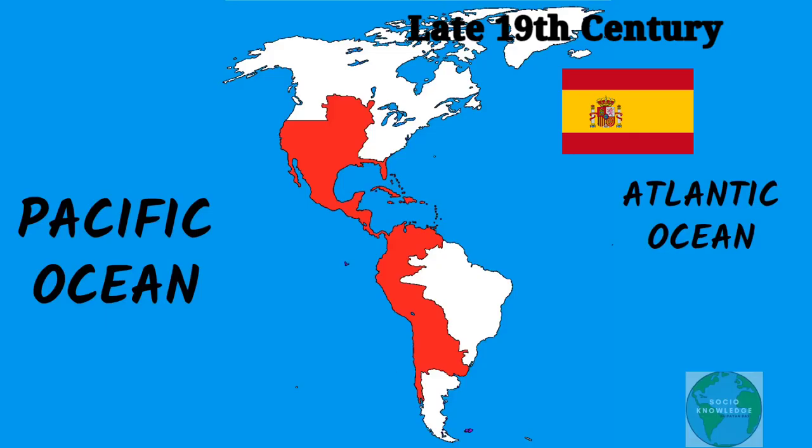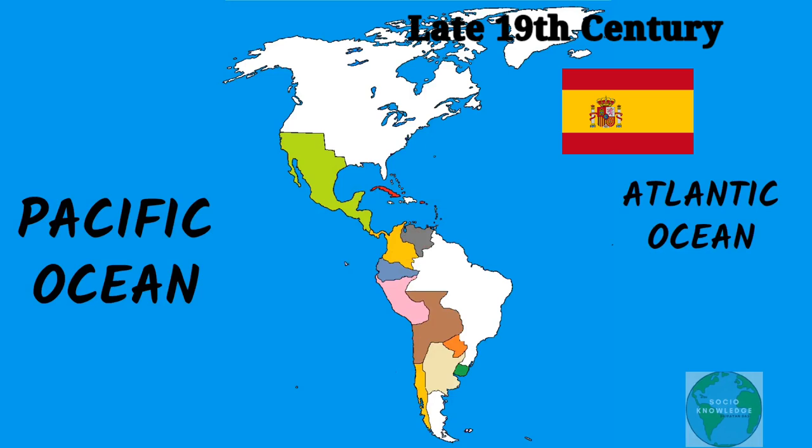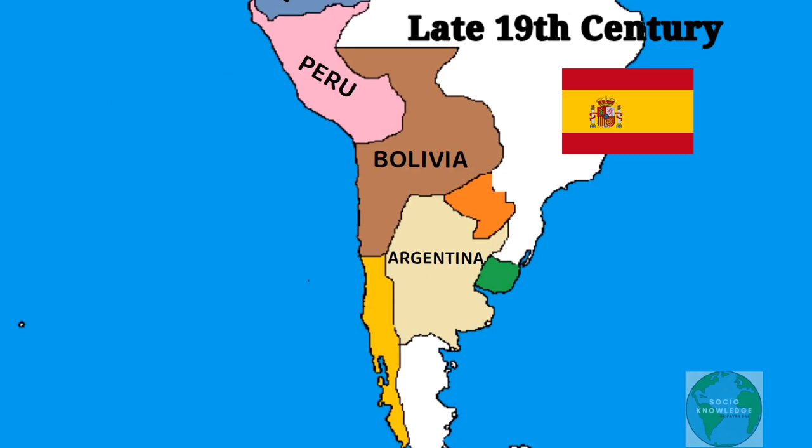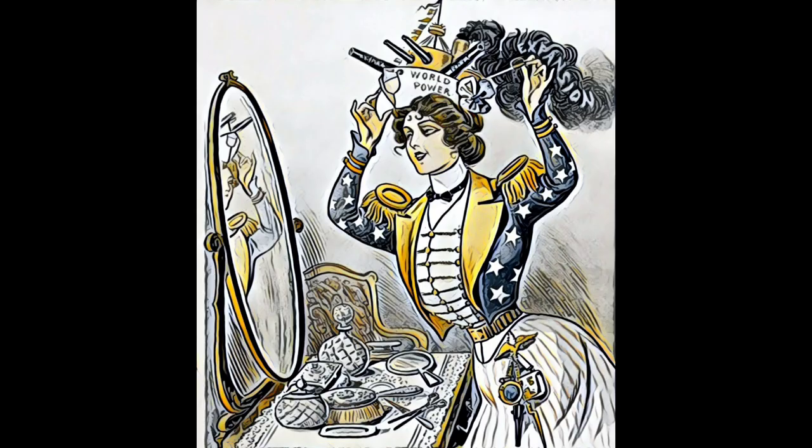The late 19th century was a time when the Spanish empire was in decline. The balance of power on the world stage was shifting. Spain started to lose one by one its American colonies, and the US started to expand. The rise of the US and the decline of Spain ultimately brought these two countries into war.